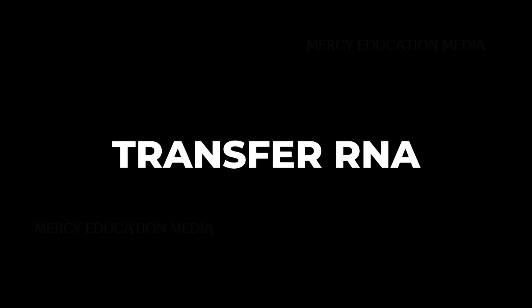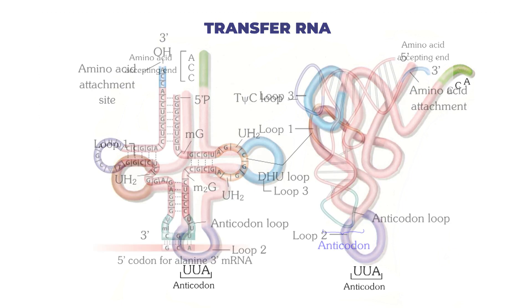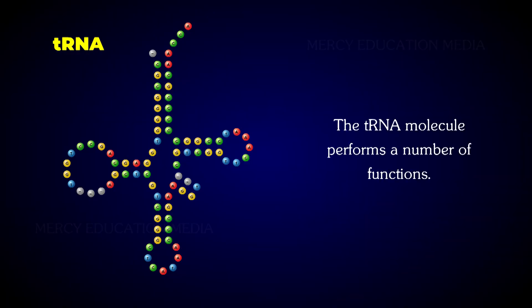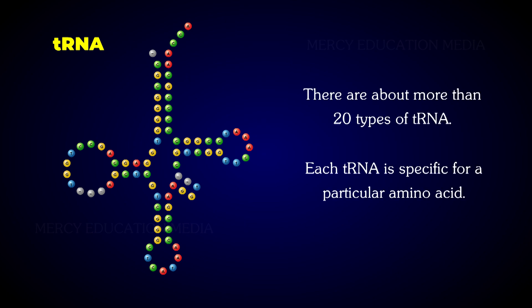Let us know about transfer RNA. Transfer RNA is also known as soluble RNA. The tRNA is a small molecule compared with other types of RNAs. It amounts to about 15% of the total RNA of the cell. The tRNA molecule performs a number of functions; the most important one is to act as a carrier of amino acids to the site of protein synthesis. There are more than 20 types of tRNAs, and each tRNA is specific for a particular amino acid.